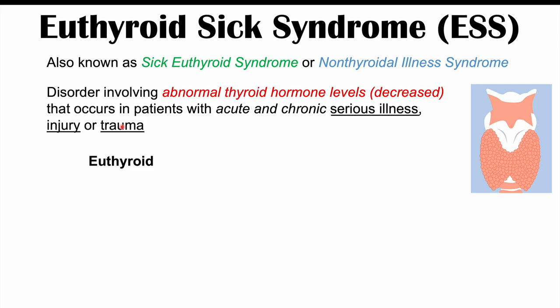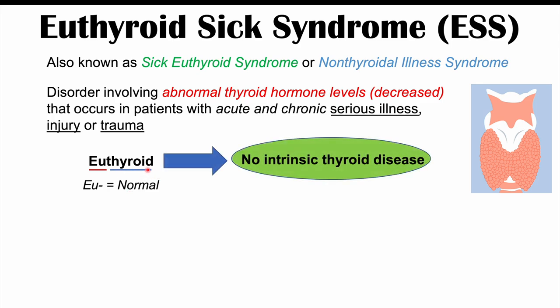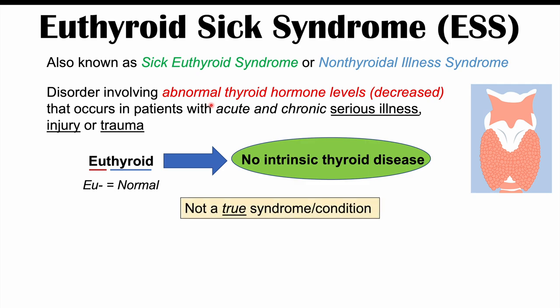If we look at the word euthyroid, it can tell us a lot about what this is. Breaking it down, the prefix 'eu' refers to a normal condition and 'thyroid' refers to the thyroid gland — so euthyroid means a normal thyroid gland. Euthyroid sick syndrome is actually a case where there is no intrinsic thyroid disease. It presents with abnormal thyroid hormone levels but no underlying thyroid pathology. It is not a true syndrome on its own — it is due to some other underlying condition affecting thyroid hormone levels.